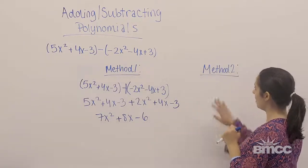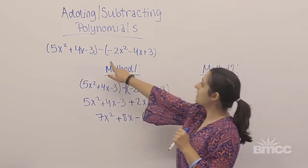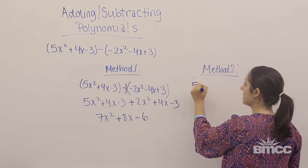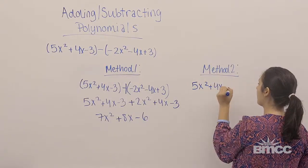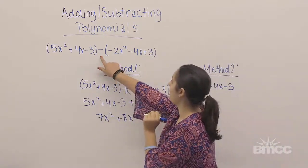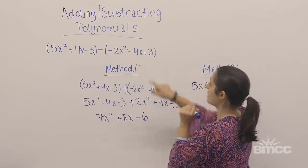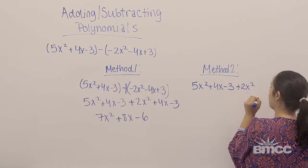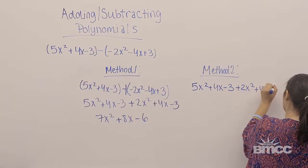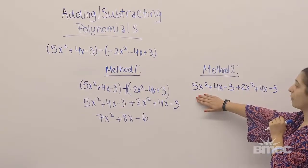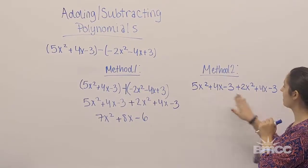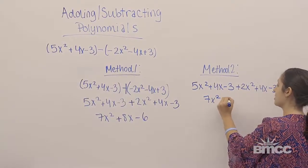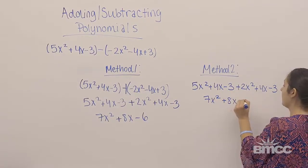Another method: when you see subtraction, drop the parentheses from the first polynomial to get 5x squared plus 4x minus 3, then automatically flip all the signs in the second polynomial — negative 2x squared becomes positive 2x squared, negative 4x becomes positive 4x, and positive 3 becomes negative 3. Now combine like terms: 5x squared and 2x squared is 7x squared; 4x and 4x is 8x; negative 3 and negative 3 is negative 6. Final solution: 7x squared plus 8x minus 6.